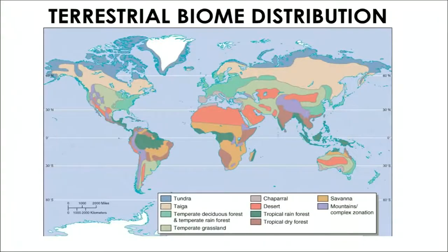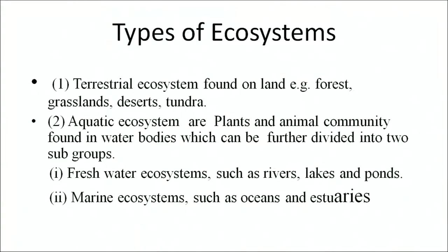There are two main types of ecosystems: terrestrial and aquatic. In this figure, you can see the distribution of deserts, grasslands, tropical, temperate, deciduous forests, mountains and mixed zones. Terrestrial ecosystems are found on land — for example, forests, grasslands, deserts and tundra. Aquatic ecosystems involve plants and animals found in water bodies, divided into freshwater ecosystems such as rivers, lakes and ponds, and marine ecosystems such as oceans and estuaries.